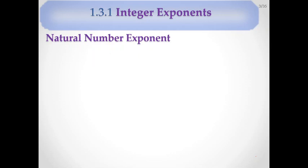Integer exponents — when we say integer, you remember these numbers: negative 3, negative 2, negative 1, 0, 1, 2, 3. These are the integers.